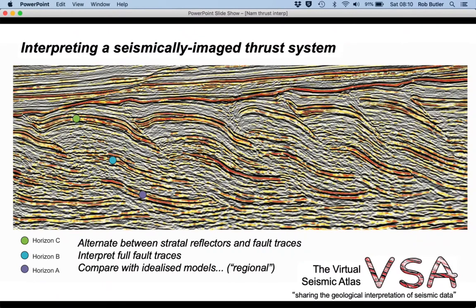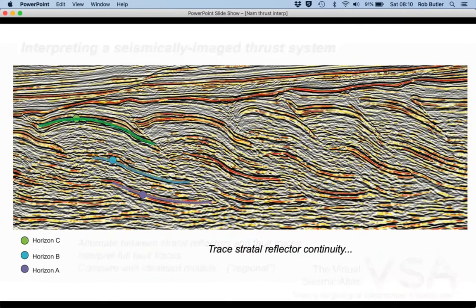Let's start off by picking some stratal reflectors around these three picked horizons as green, blue, and mauve. Okay, so there we've got the continuity of the reflectors about as far as we can push it to the right, and they seem to terminate against some kind of structure and repeat with offset into these positions over here.